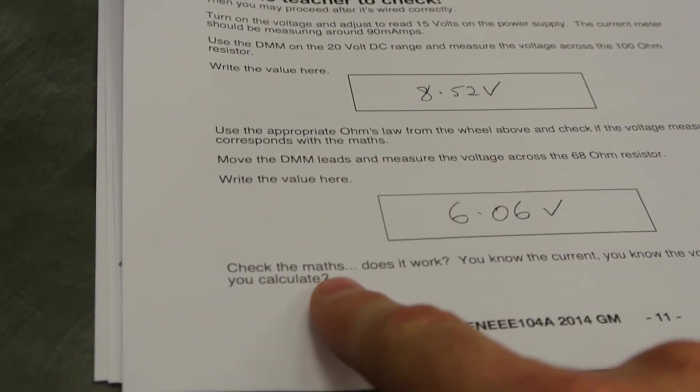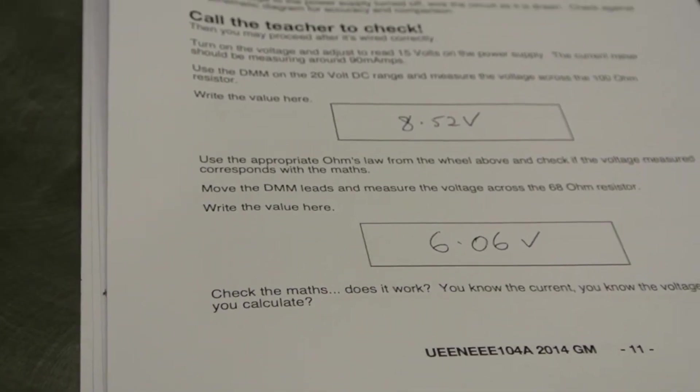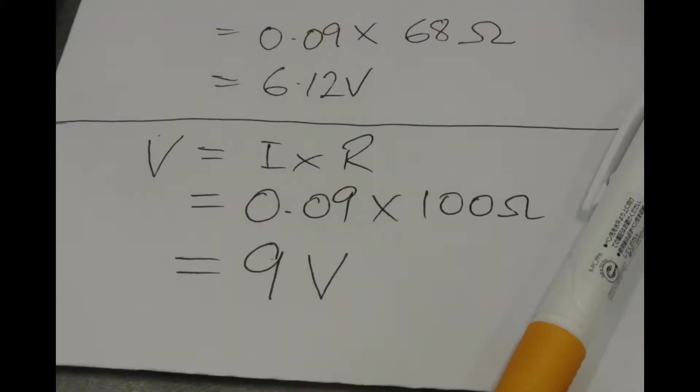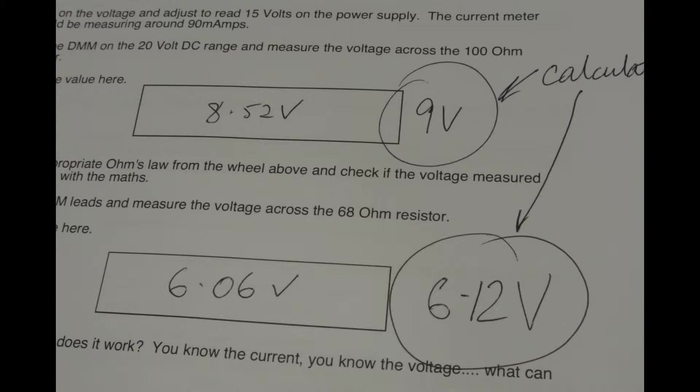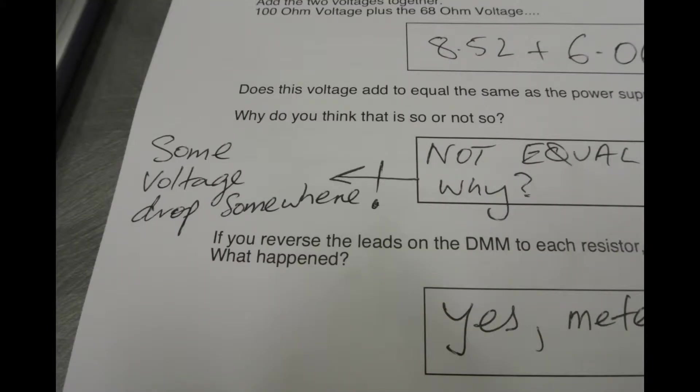Let's check the maths and see if it works. We run the maths, and on the 68-ohm resistor it works out to be 6.12 volts. On the 100-ohm resistor it gave us 9 volts. We compare those values with what we measured, and although we're close, 8.52 to 9, the two voltages added up to 14.58 volts. They're not equal. Why not?